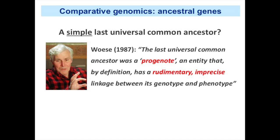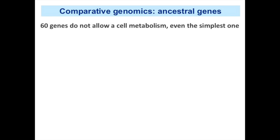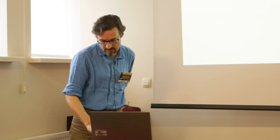However, 60 genes is a very short list — far too few. This would be in agreement with ideas proposing that LUCA was very simple, such as the progenote concept, which held that the last universal common ancestor was a very rudimentary and primitive entity. But this view is problematic because with 60 genes you cannot have a cell metabolism — even the simplest one you can imagine requires more genes than that.